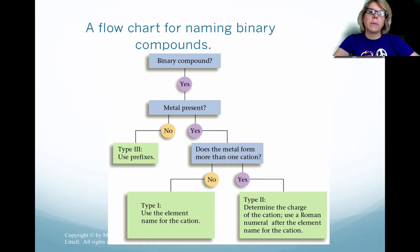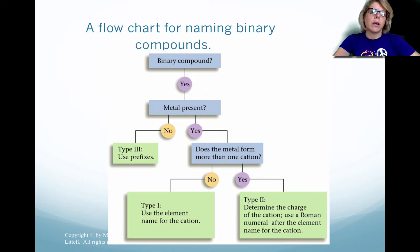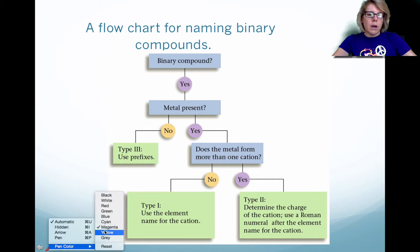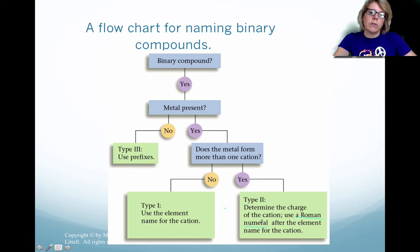Here's a flowchart for naming binary compounds. Notice that you need to look and see if there is a metal present — that's going to be the cation. If there isn't a metal present, that's considered Type 3, which we'll talk about in the next chapter. But if there is a metal present, the question is: does it form more than one cation? If it's Type 2, we use a Roman numeral after the element's name, because there might be more than one charge for that transition metal.